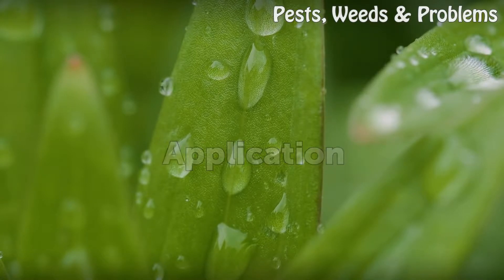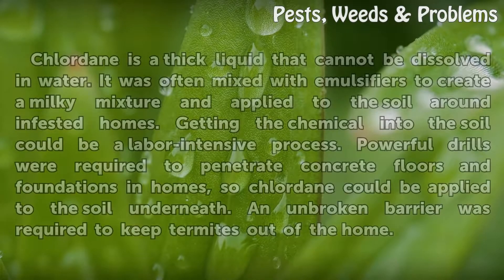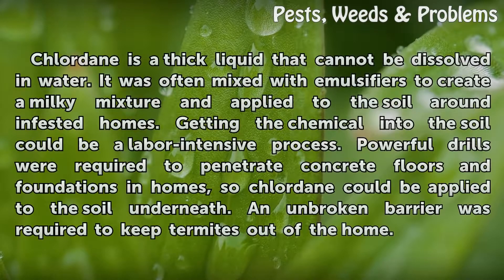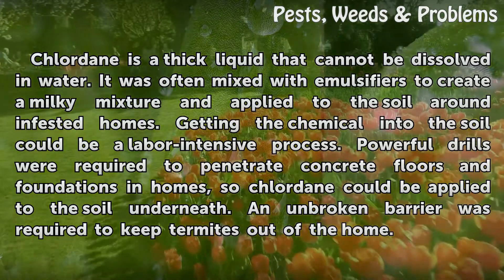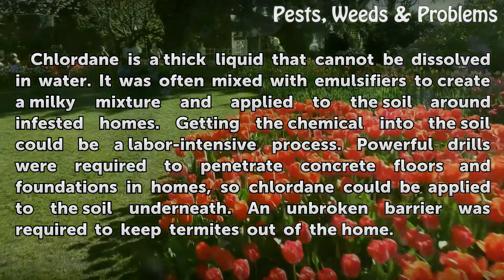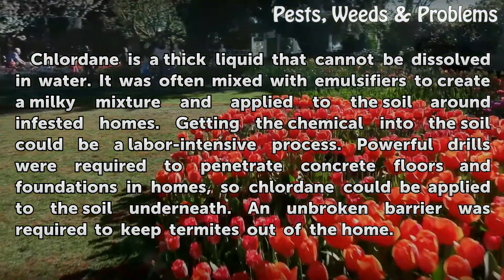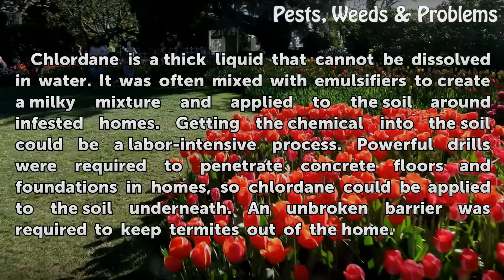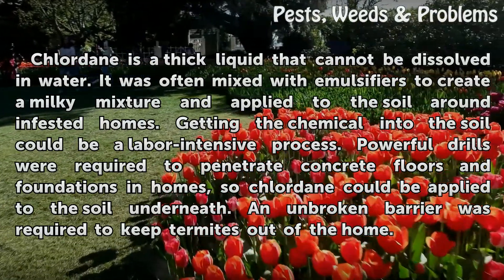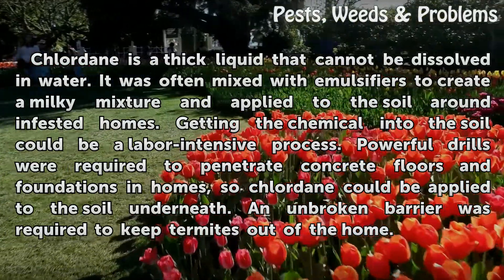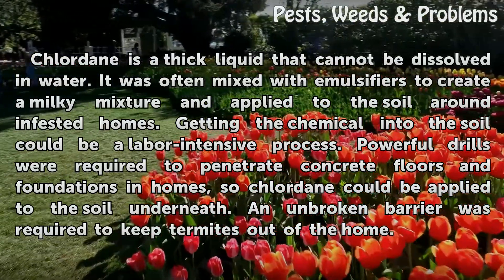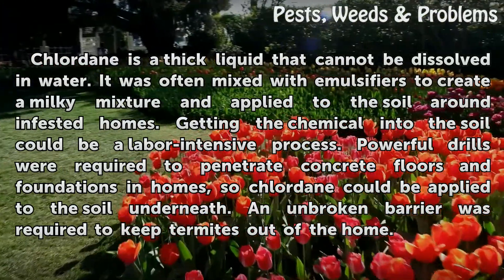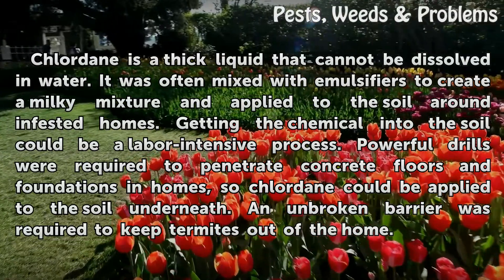Chlordane is a thick liquid that cannot be dissolved in water. It was often mixed with emulsifiers to create a milky mixture and applied to the soil around infested homes. Getting the chemical into the soil could be a labor-intensive process.